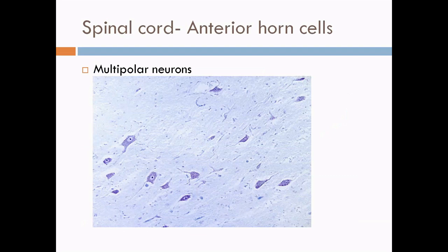This is a high power section in which we can see the cell bodies of the motor neurons which are multipolar in nature. They have an open nucleus with a prominent nucleolus.